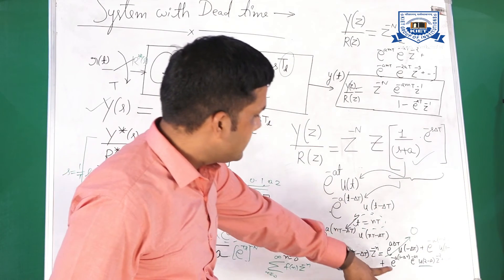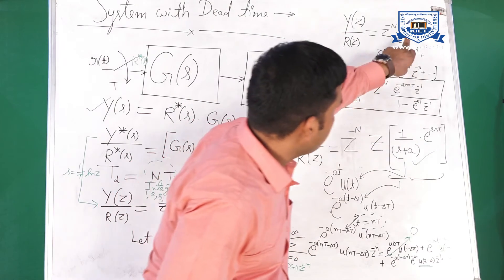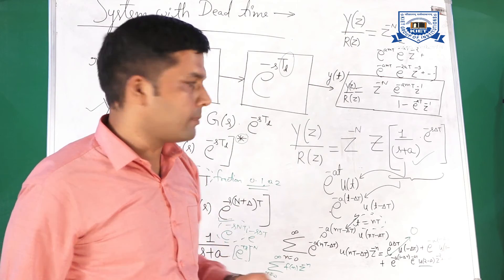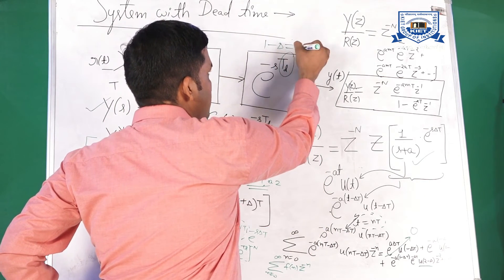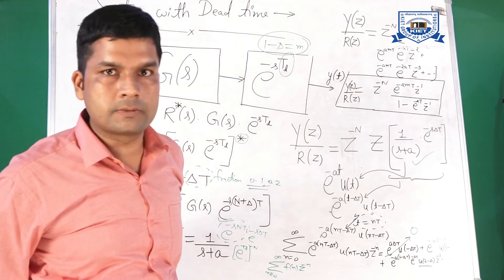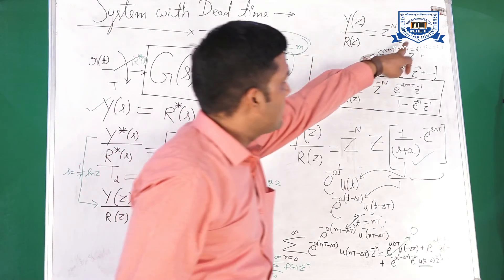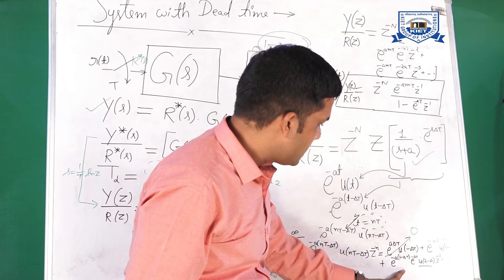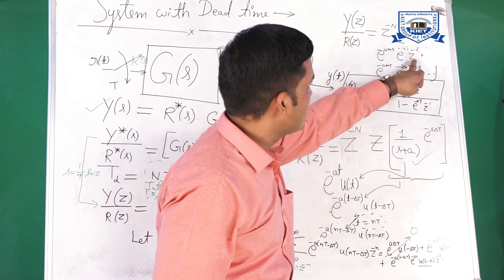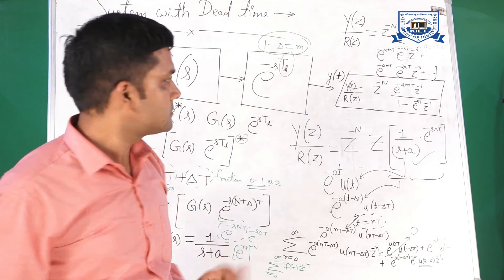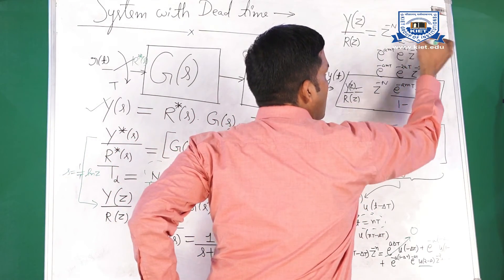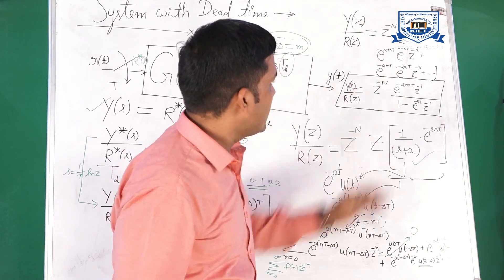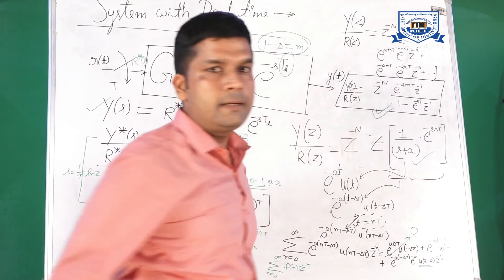Now, it will be represented as e to the power minus a into 1 minus delta. 1 minus delta is equal to m. 1 minus delta is represented as m. m is the modified Z transform coefficient. e to the power minus a into z inverse plus e to the power minus amt into e to the power minus z to the power minus 2 and so on. Now, we can take common e to the power minus amt into z inverse and we get this.